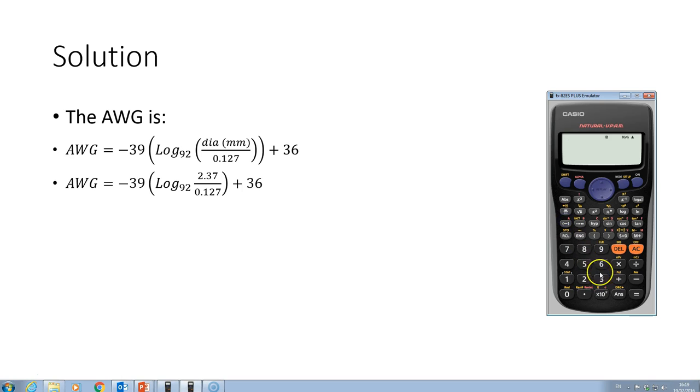So we're going to go minus 39. I'm going to multiply this and I'll put this stuff in brackets by the log to the base 92. So I'm going to use this button here. So that's base 92. And that is going to be 2.37 over 0.127.